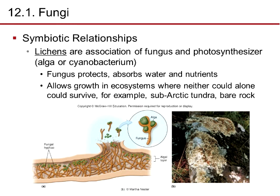Fungi have symbiotic relationships. Lichens are an association between a fungus and a photosynthesizer — algae or cyanobacteria. The fungus protects, absorbs water and nutrients, while the photosynthesizer provides organic compounds. This combination allows growth in ecosystems where neither organism could survive alone — for example, on bare rock in the sub-arctic tundra.